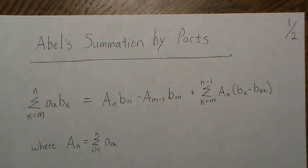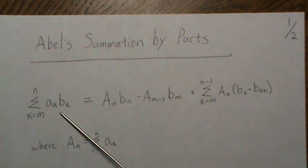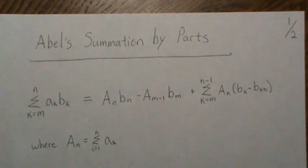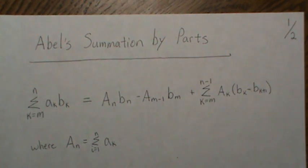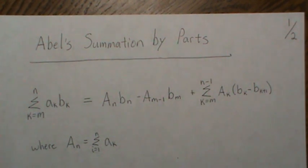Kronecker's lemma deals with convergent series of this kind, where it's the product of two sequences, and then that result is used to prove a version of the central limit theorem.